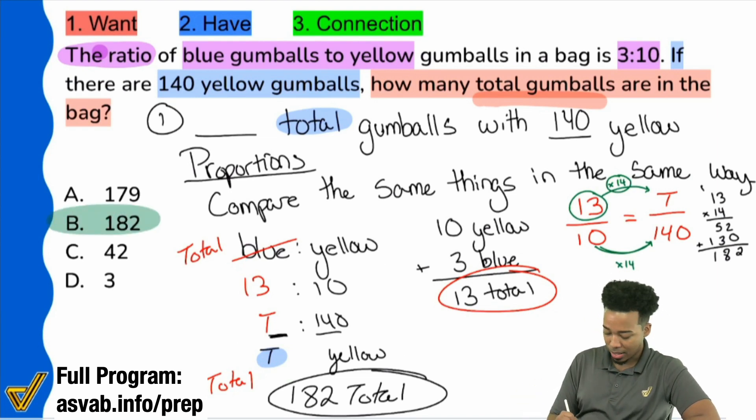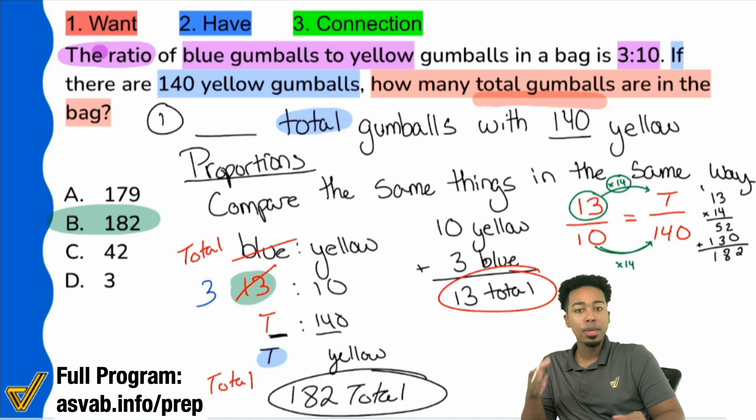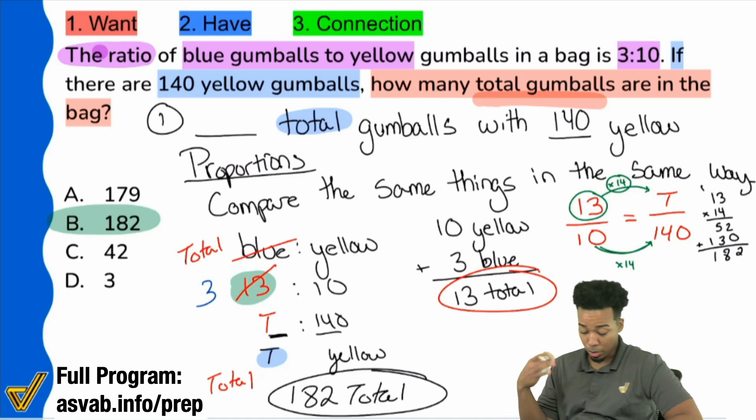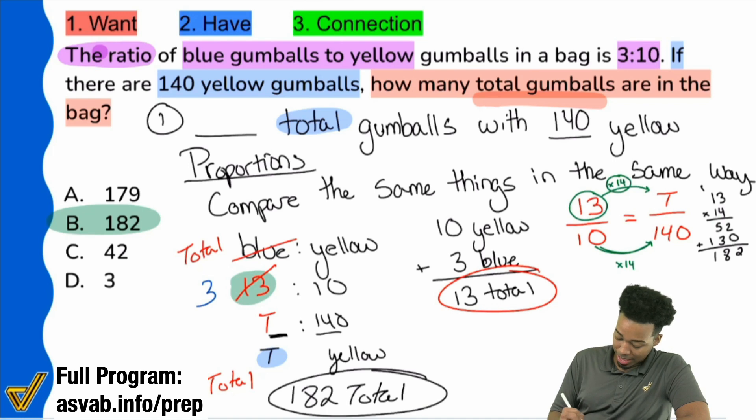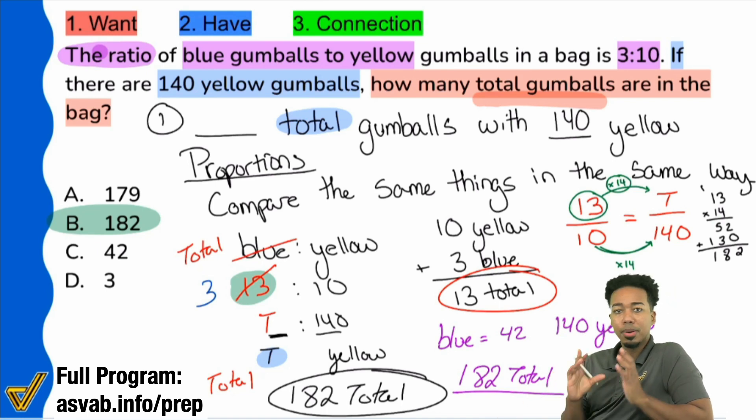Now, if you would have accidentally not done this part right there, if you would have accidentally left that as 3 for the blue, no worries at all. Because if you would have used that, when you solve this problem, you may have gotten 42. You would have gotten blue equals 42. And because you already have 140 yellow, we would go ahead and add these together and that would give you your total of 182 total gumballs. So two different ways to solve it. But I want to make sure you understand why these setups matter because it's not just about calculating correctly. It's about calculating correctly from a proper setup.